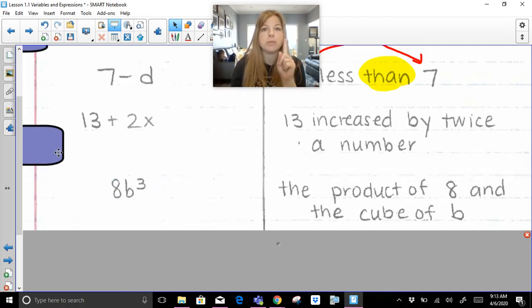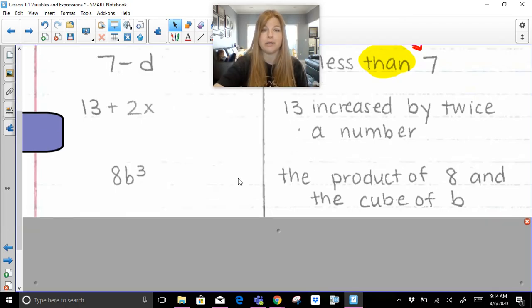So the product of 8 and the cube of b would simply be 8b cubed. When you have values that are side by side, side by side means multiply. So I don't need any raised dot. I definitely don't need a multiplication x and I don't even need parentheses. This is all you need. 8b cubed.